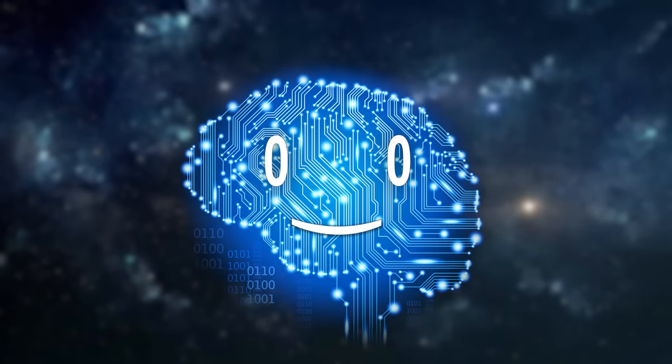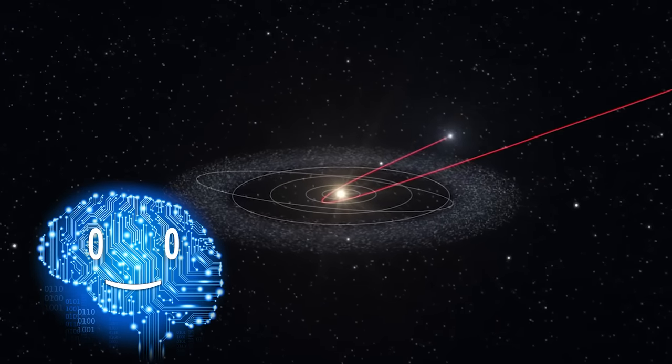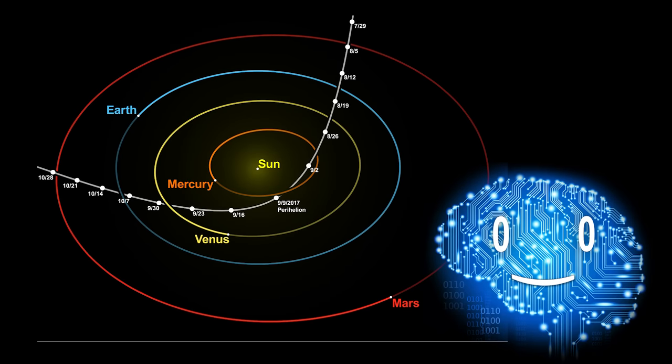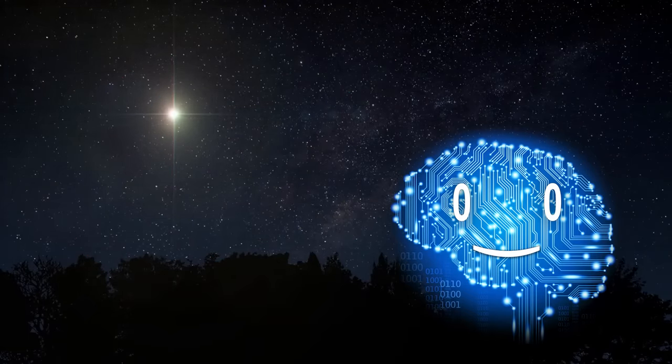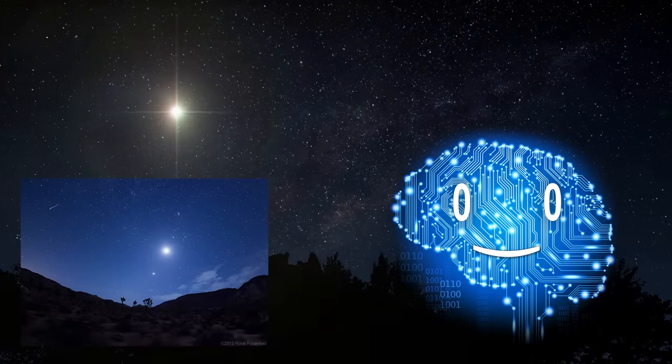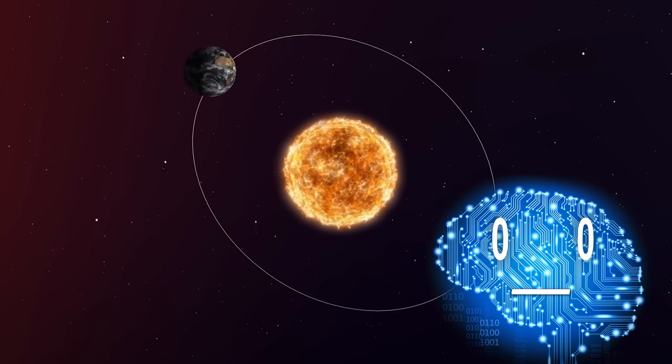However, the much more likely and interesting scenario is that of a close flyby in the inner solar system. If, say a large super-Earth took the path of Oumuamua, it would appear as a bright star, rivaling even Venus at its closest approach. As it got closer, the Earth would be tugged towards the Sun, forever shifting its orbit.